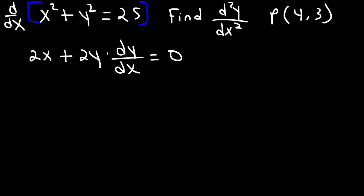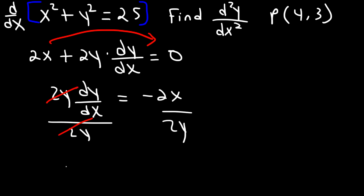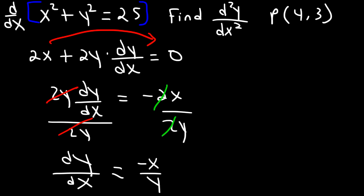So let's take the 2x and move it to the other side — it's going to be negative 2x on the other side. Then let's divide both sides by 2y. We can cancel the 2, so dy over dx is equal to negative x over y. This is the first derivative.